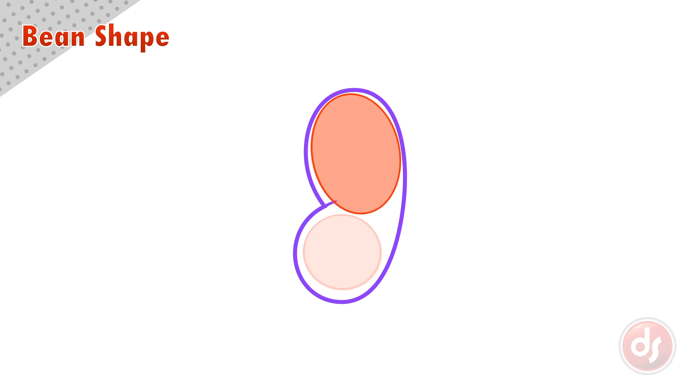In the bean shape we want to make the upper half of the bean a little taller than the lower half. This accounts for the proportion of the ribcage being bigger than the pelvis.